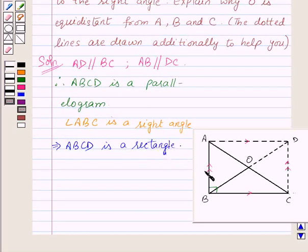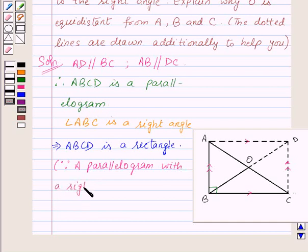Do you know why I called ABCD a rectangle? Because a parallelogram with a right angle is a rectangle.